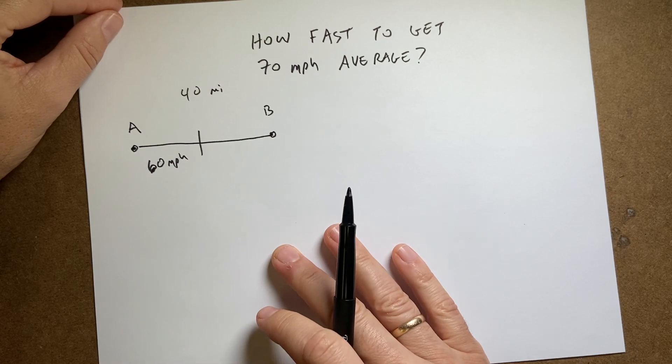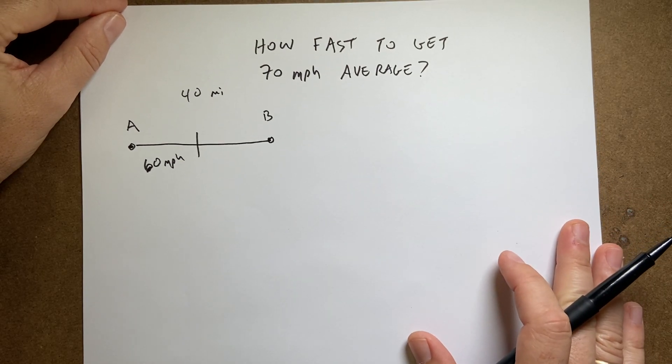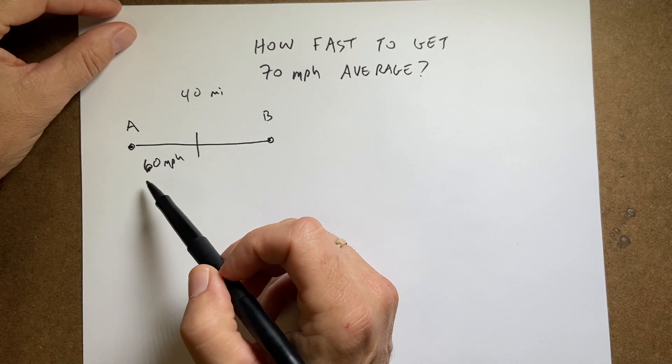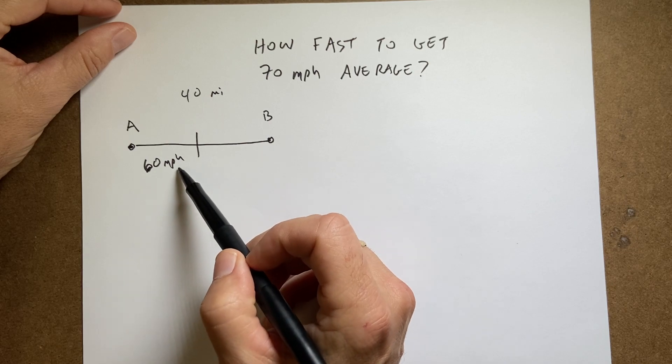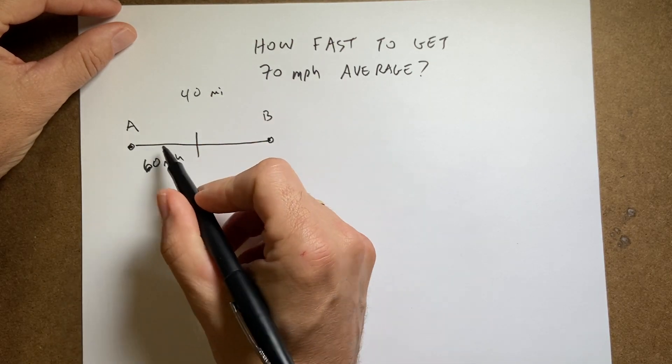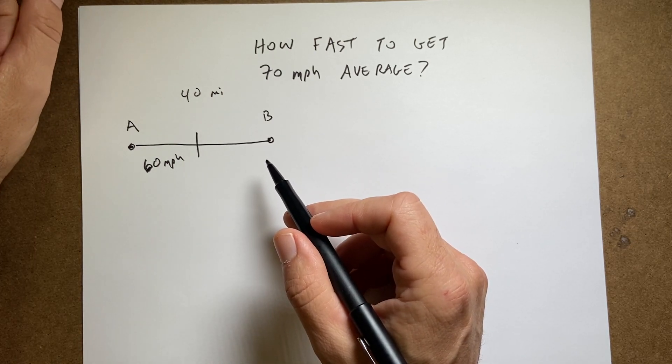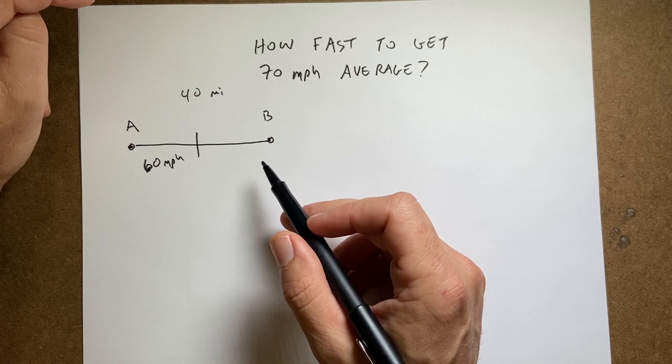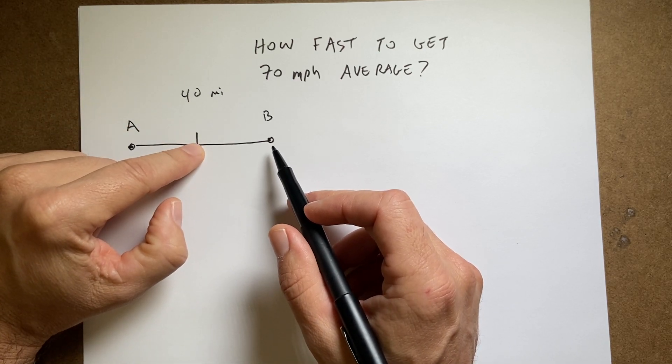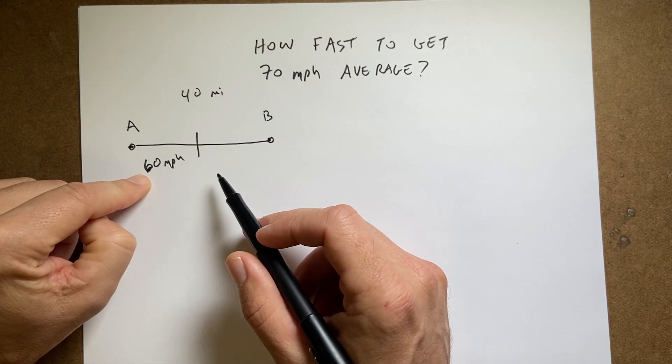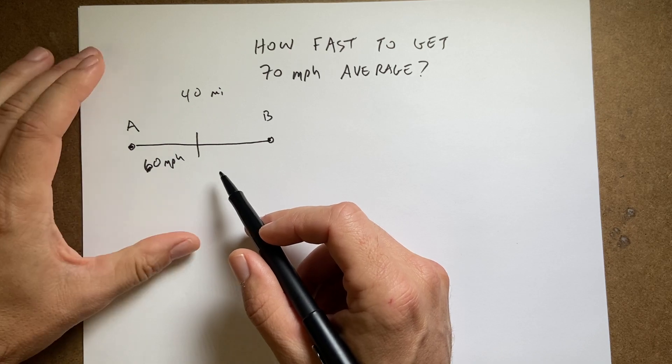And so I break this trip. I drive on the interstate, and the first half of the trip I go an average of 60 miles per hour. So that's 20 miles halfway. And then the second half I'm like, oh man, I need to make my average velocity 70 miles per hour. So how fast do I have to go on the second half to get average speed of 70 miles per hour?